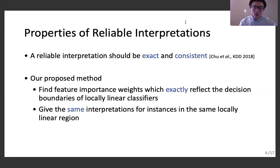Based on the two criteria, we proposed an interpretation method that assigns an important weight to each feature, which exactly reflects the decision boundaries of locally linear classifiers. And the proposed method can also provide the same interpretations for instances in the same locally linear region.